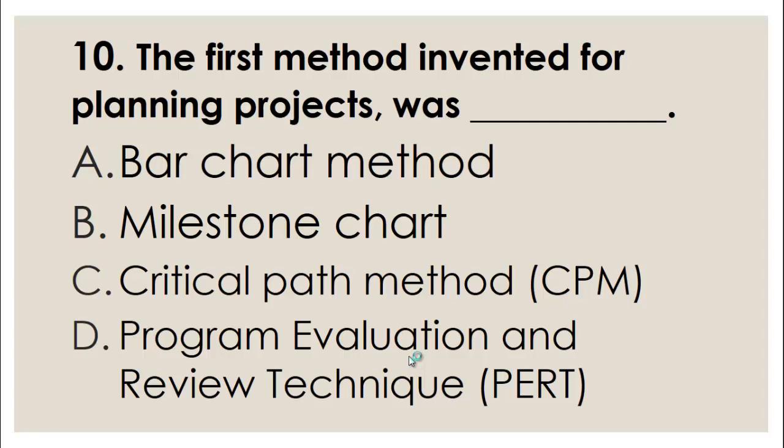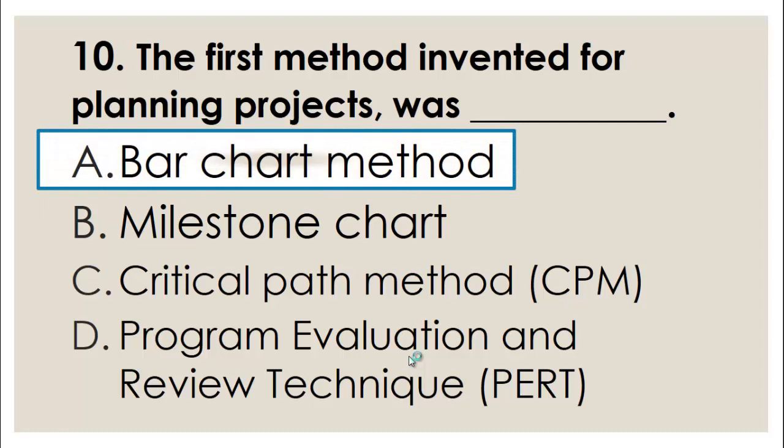MCQ number ten: The first method invented for planning a project was — A) Bar chart method, B) Milestone chart, C) Critical Path Method, D) Program Evaluation and Review Technique (PERT). Among the following, the first method used for planning a project is the bar chart method, so the right choice is A, bar chart method.